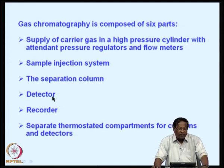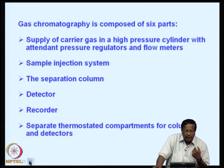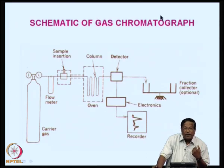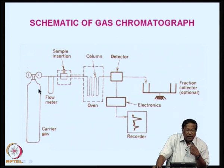The fourth component is the detector and recorder, and the last one is compartments for columns and detector. We will take a look at each of these components in a detailed fashion. We can see the schematic of the gas chromatograph: the first part is the carrier gas cylinder through which the gas is allowed to pass through a flow meter.